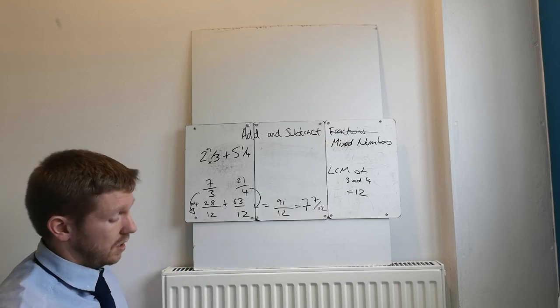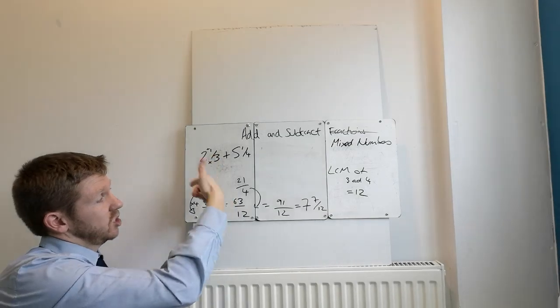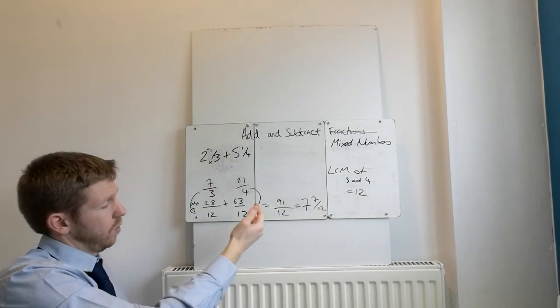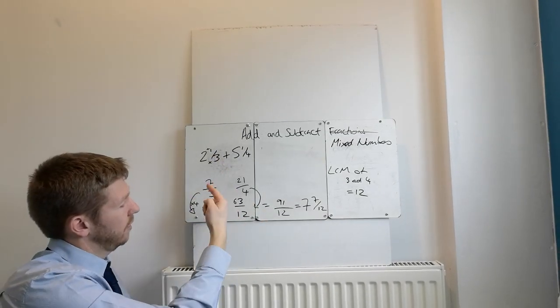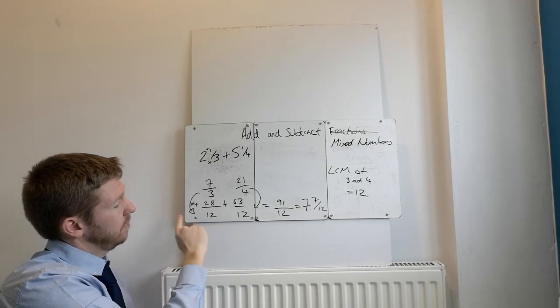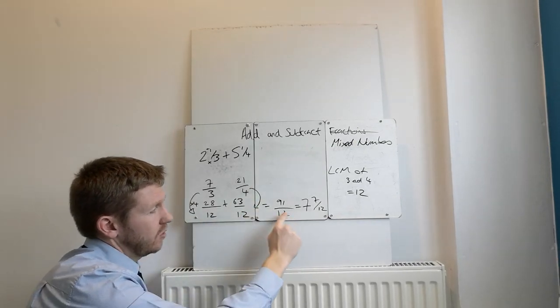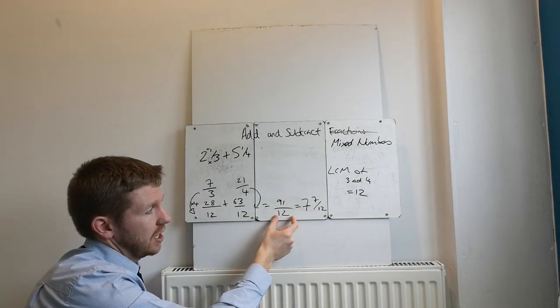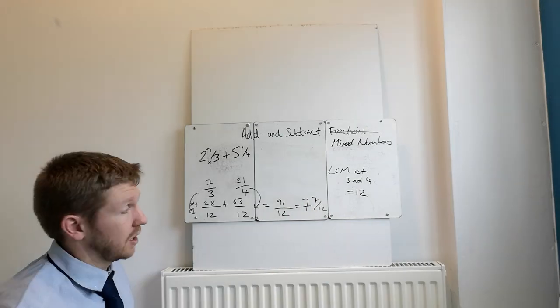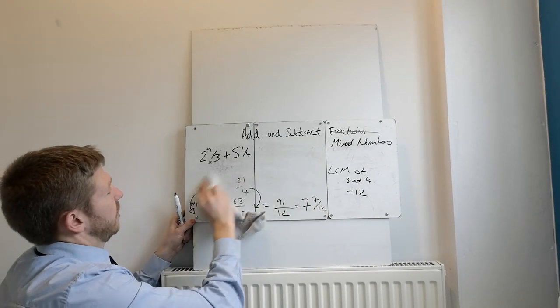So 7 and 7 twelfths. Now that's adding mixed numbers. So steps: change them to top heavy fractions, or vulgar as you might say in America. Then you add them, convert them so they've got the denominator the same. Add the fractions, and then if you get an improper fraction at the end, generally they're going to ask you to make it into a mixed number. We move on. Good times.